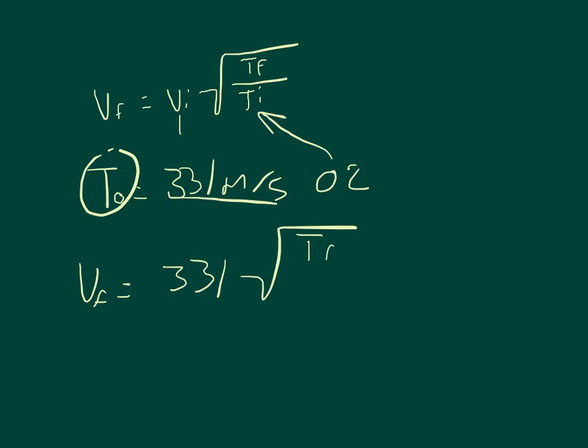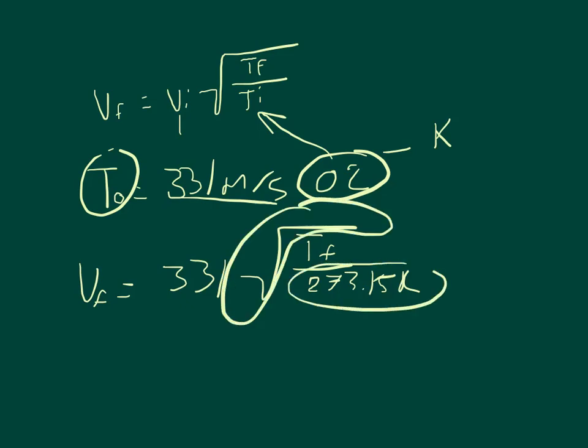and we will convert this 0 Celsius to Kelvin, so divide it by 273.15 Kelvin. And because the 273.15 is in the denominator of a square root, you can actually just say 273 and you're going to get the same answer at four significant figures.